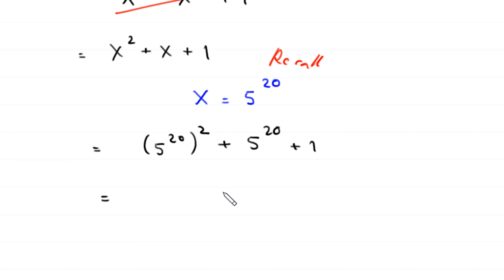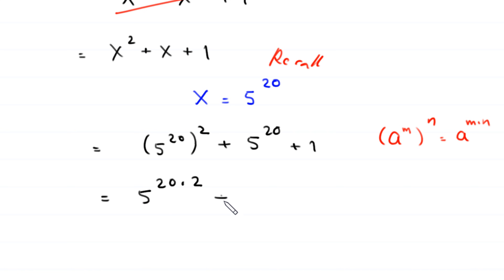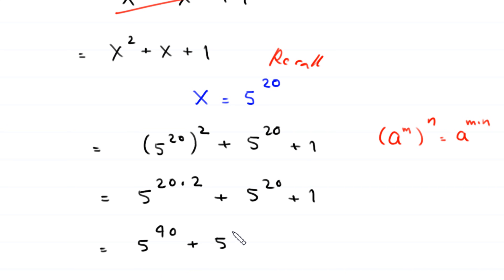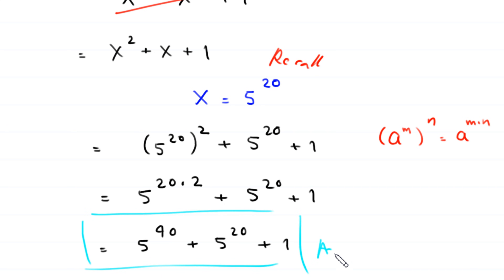Next, by using the power rule a to the power m whole to the power n equals a to the power m times n, this becomes 5 to the power 20 times 2, plus 5 to the power 20, plus 1. So 5 to the power 20 times 2 gives 5 to the power 40, plus 5 to the power 20, plus 1. This is the simplest form and the final answer of this problem. See you.